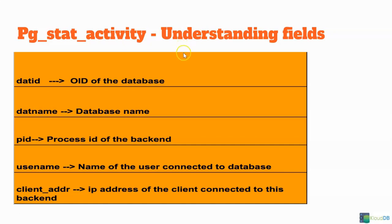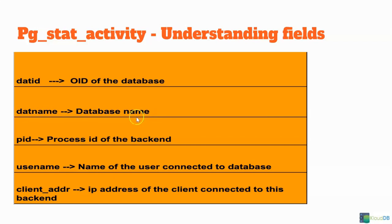In PG Stat Activity, there are some important columns or fields that we need to understand. One is datid, which is the OID of the database. In Postgres, each database has a unique OID, and this is retrieved from this column. And then datname is nothing but the database name. Let's say you have 10 databases and you want to know the queries of a particular database — you can filter by this column. And then PID is the process ID of the backend.